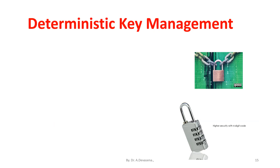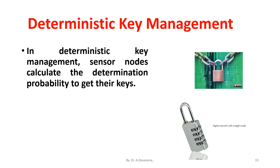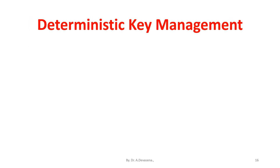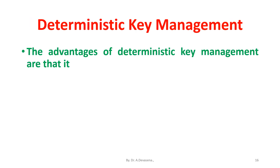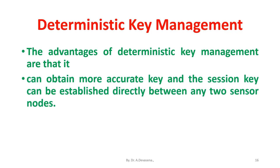In the deterministic key management scheme, the sensor nodes calculate the determination probability to get their keys. The advantages are that it can obtain more accurate keys and the session key can be established directly between any two sensor nodes.